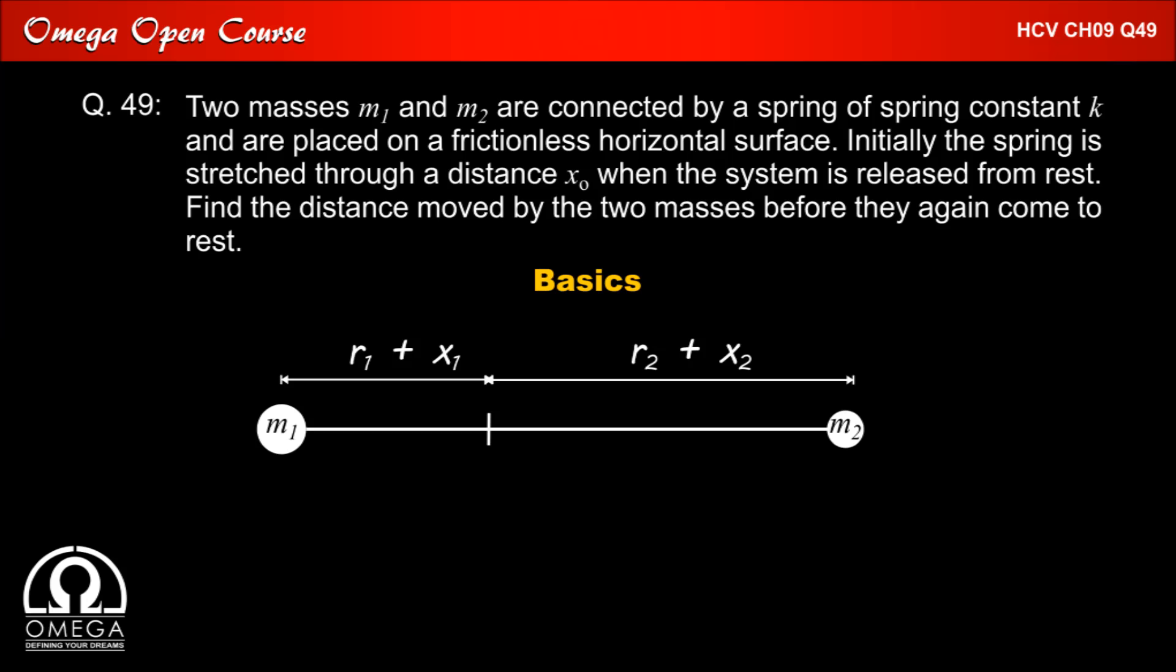Since center of mass is still at origin, M1 into R1 plus x1 equals M2 into R2 plus x2, which implies M1 R1 plus M1 x1 equals M2 R2 plus M2 x2. Now since M1 R1 and M2 R2 are equal, we get M1 x1 equals M2 x2. This means whenever two bodies are moved in a manner that its center of mass does not move, the product of mass and displacement of both the bodies must be equal.